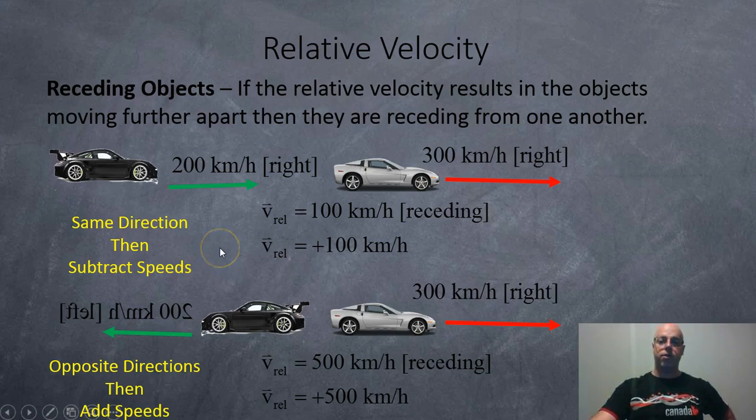So here are receding objects. If the relative velocity results in the objects moving further apart, then they're receding from one another, kind of like my hair did a long time ago. So in this case here, we've got a Porsche traveling to the right at 200 km per hour, and we have a Corvette speeding away at 300 km per hour. So how quickly is the Corvette escaping from the Porsche? It's escaping at 100 km per hour.